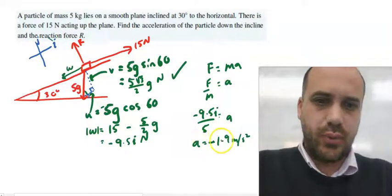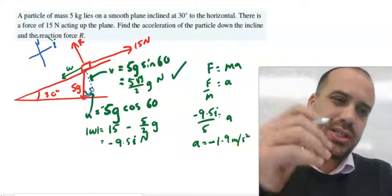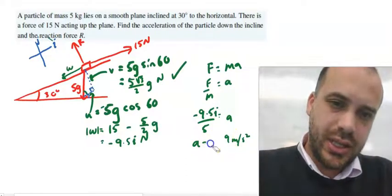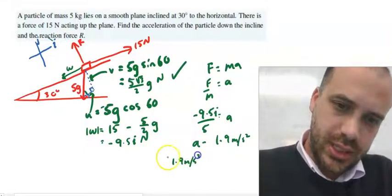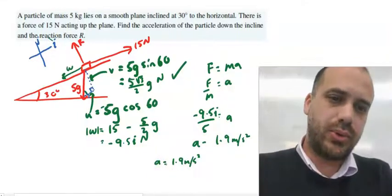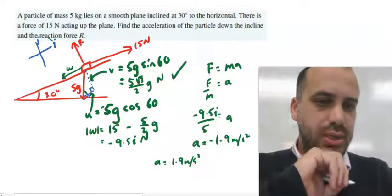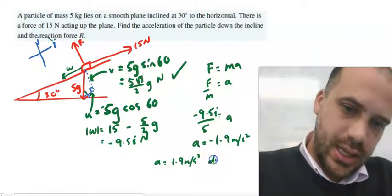So, an acceleration of negative 1.9 metres per second squared. We really need to correct this and interpret it. 1.9 metres per second squared. Acceleration is equal to 1.9 metres per second squared down the incline.